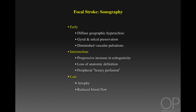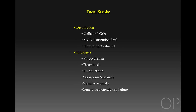Late, after several weeks, we see atrophy — generalized or regional — and reduced cerebral blood flow. Focal stroke has a distribution almost exclusively in the middle cerebral artery, is unilateral in the majority of cases, and has an interesting predilection to the left side. We see this in patients with polycythemia or hypercoagulable states, in patients who have embolized from other sources, patients exposed to cocaine prenatally, and patients who have had a vascular anomaly or generalized circulatory failure.